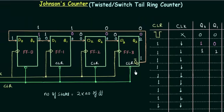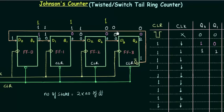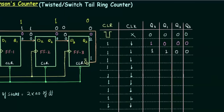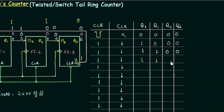For the third falling edge: Q3 is still 0 so Q3 complement is 1, meaning D0 is 1. Q0 is 1 so D1 is 1. Q1 is 1 so D2 is also 1. Q2 is 0 so D3 is 0. Therefore Q0 is 1, Q1 is 1, Q2 is 1, and Q3 is 0. So after the third falling edge we have: 1, 1, 1, 0.